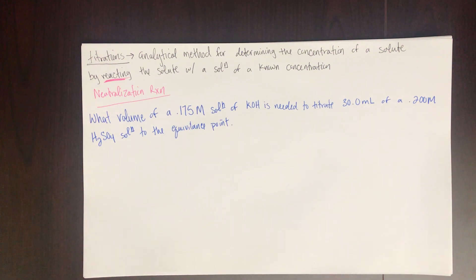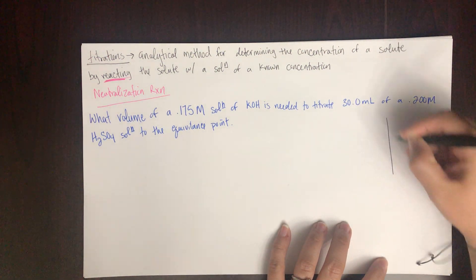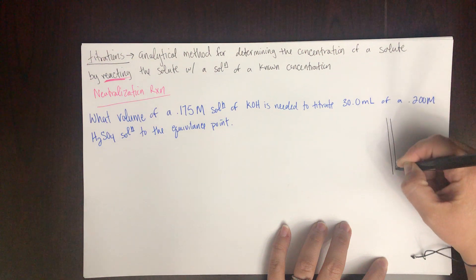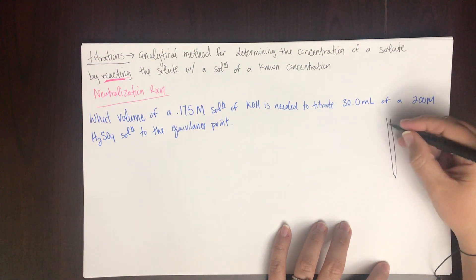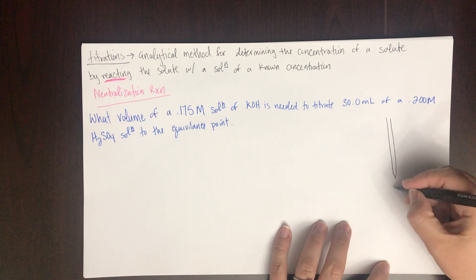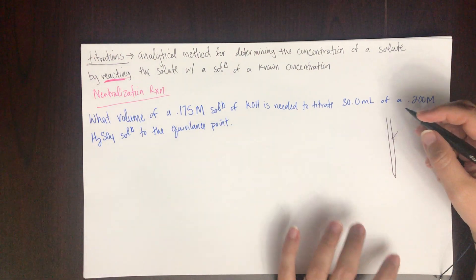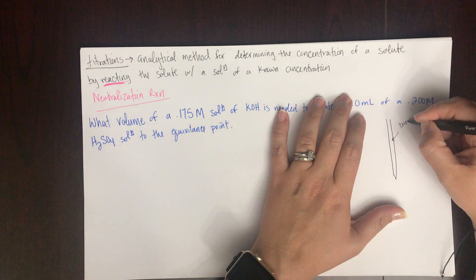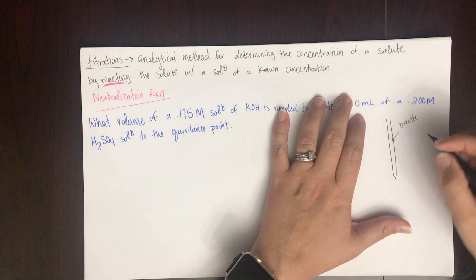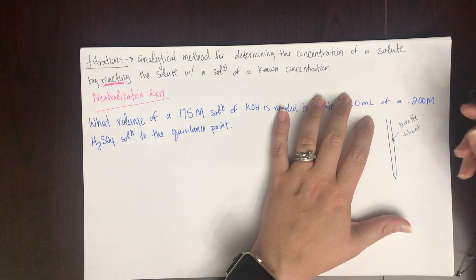Let's draw what's happening in a titration. In lab you'll use a burette — a long tube with graduated marks and a stopcock at the bottom that controls the flow of solution. Inside the burette you have what's called the titrant.